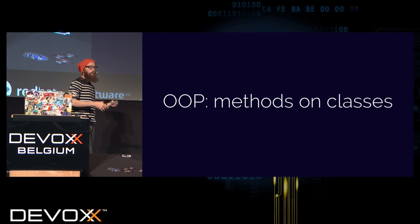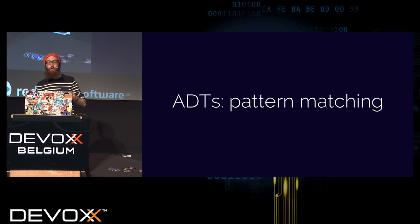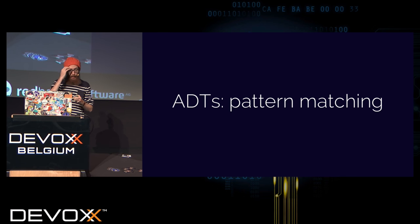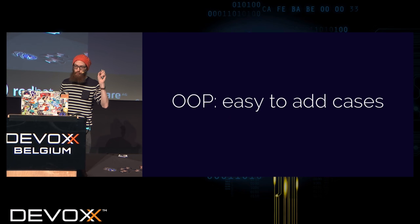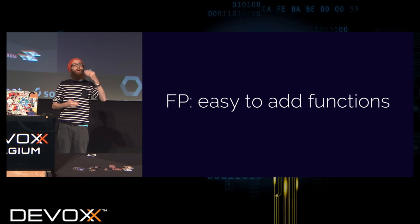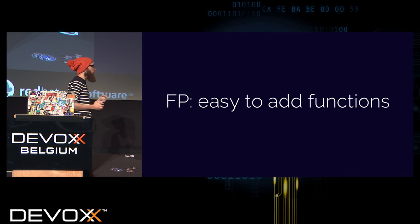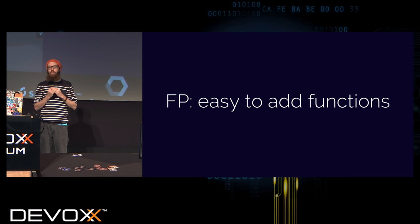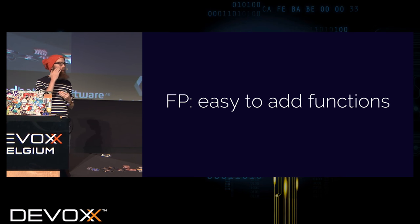In OOP, for structures like that, you add methods and classes and let dispatch be handled that way. When working in a more functional style with ADTs, you add pattern matching to have behavior outside the different alternatives. In OOP it's easy to add cases — you create a new file, implement all the methods, and when it compiles you can ship it. In FP it's easier to add functions — you add a new pattern matching block, handle all the cases, and it's done. That's the expression problem, which shows the divide between OOP and FP.